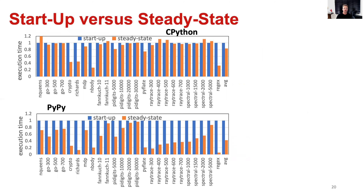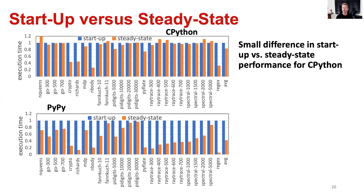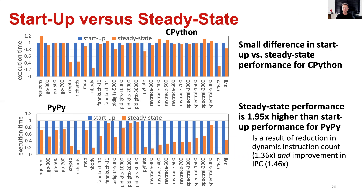Comparing startup performance to steady state performance — CPython on the top graph versus PyPy on the bottom — the difference between startup and steady state performance is relatively small for CPython, but there is a big difference for PyPy. Steady state performance is about 1.95 times faster than startup performance for PyPy, as a result of the reduction in dynamic instruction count combined with an improvement in IPC.